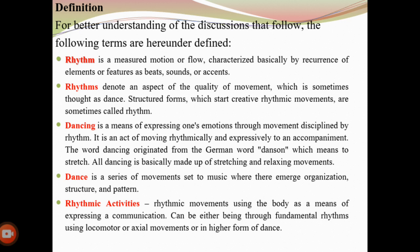Rhythms is about a pattern of long and short beats that are repeated. For example, the measured steps that we are going to repeat, like two steps in marching so that the steps have timing with the music. The third term is dancing — the movement that we perform in dance. The fourth term is dance — a series of movements set to music where they are merged in organized structure and pattern.